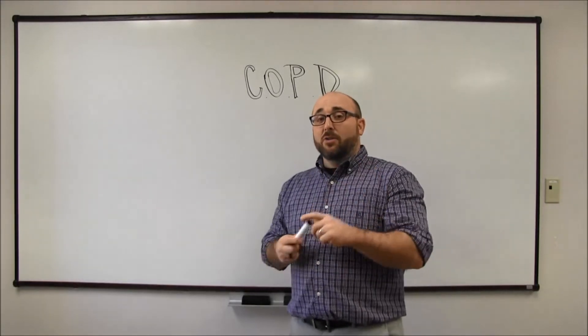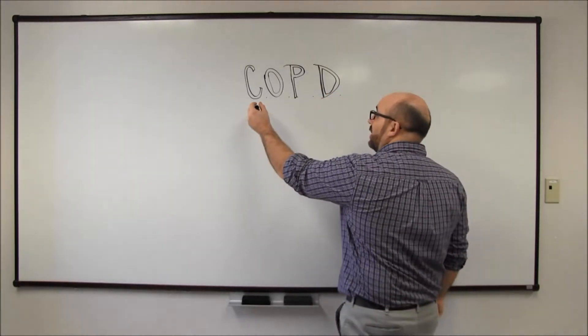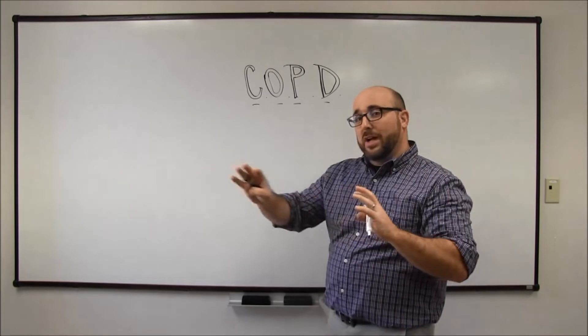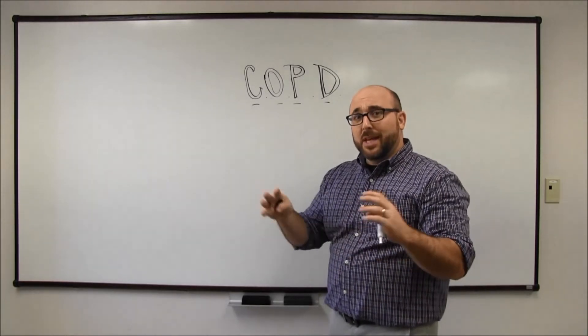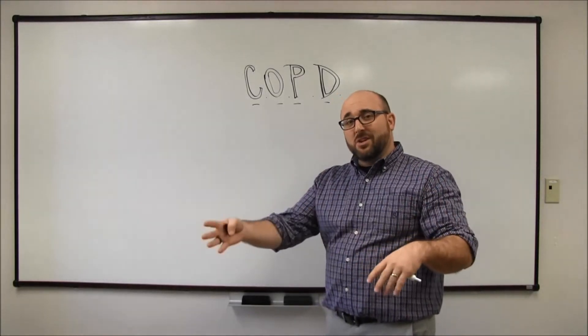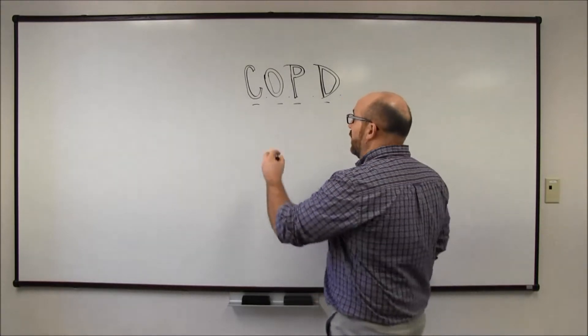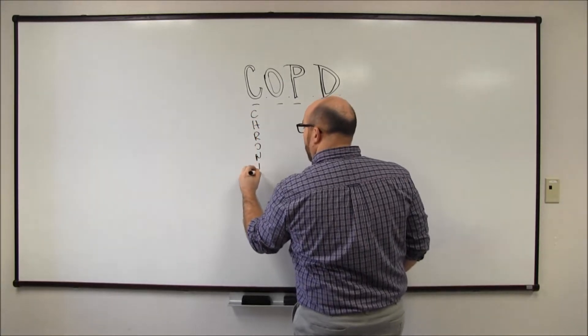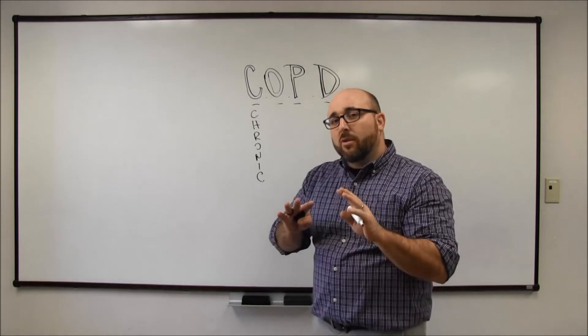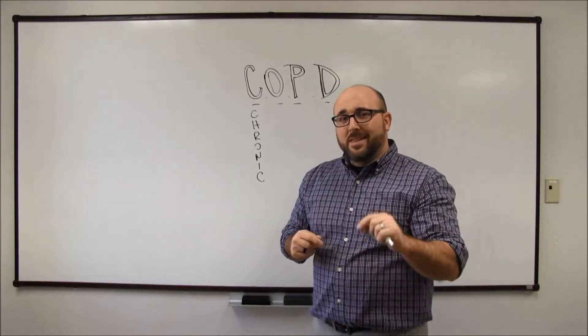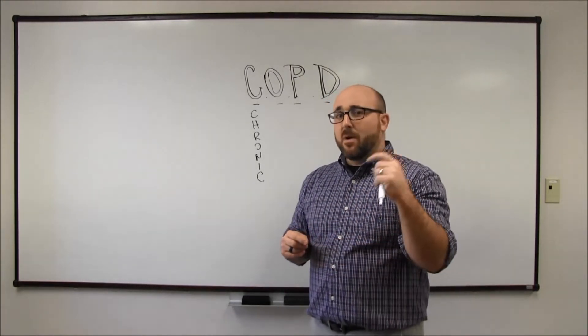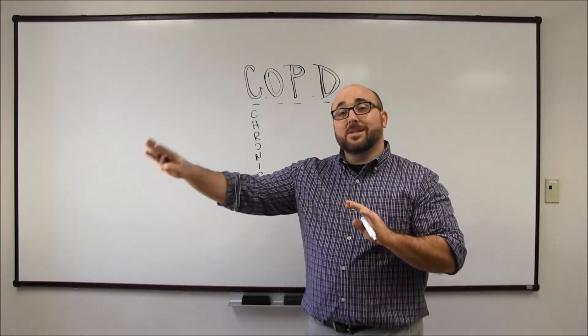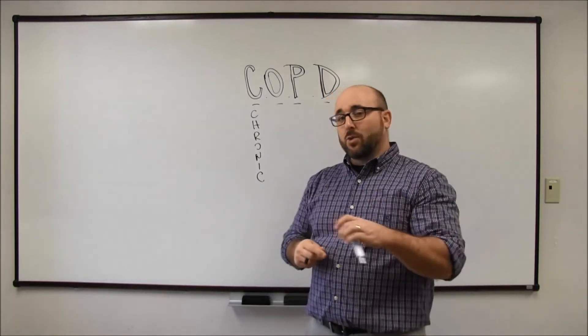So first, let's go through the acronym. We have COPD. This stands for chronic, a medical term meaning over a long period of time. The opposite of chronic in medical terms is acute, which is something that happens really quickly. So chronic just means over a long period of time. This is a type of disease that doesn't just come up overnight, doesn't come up over a week or a month. This is something that takes months on months plus years to develop. So it's a chronic disorder.